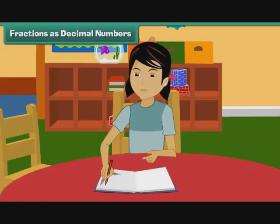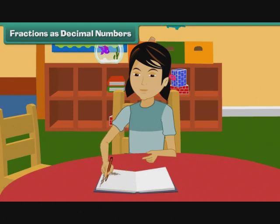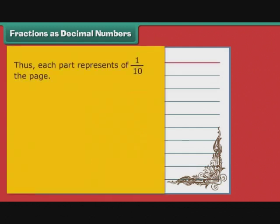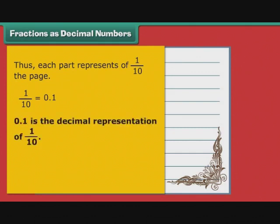Fractions as Decimal Numbers. Arpita is busy decorating the pages of her personal diary. The lines on a page of her diary divide the page into 10 equal parts. Thus, each part represents 1 by 10 of the page. 1 by 10 can also be written as 0.1. Therefore, we can say that 0.1 is the decimal representation of 1 by 10.